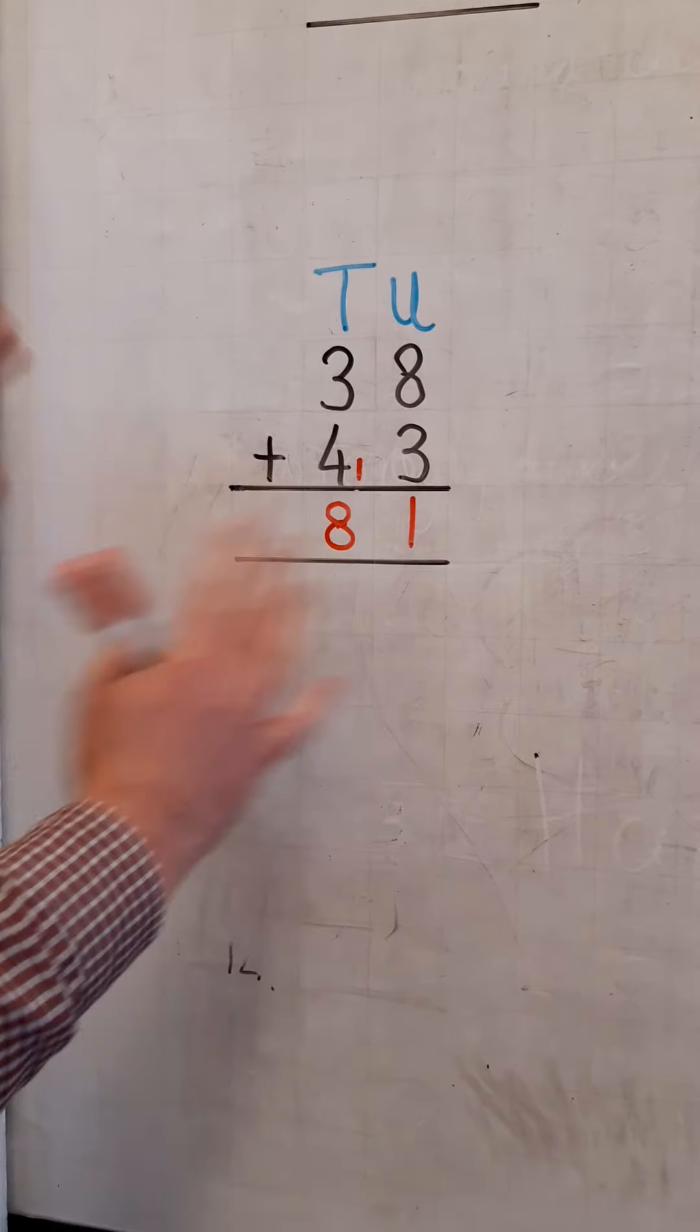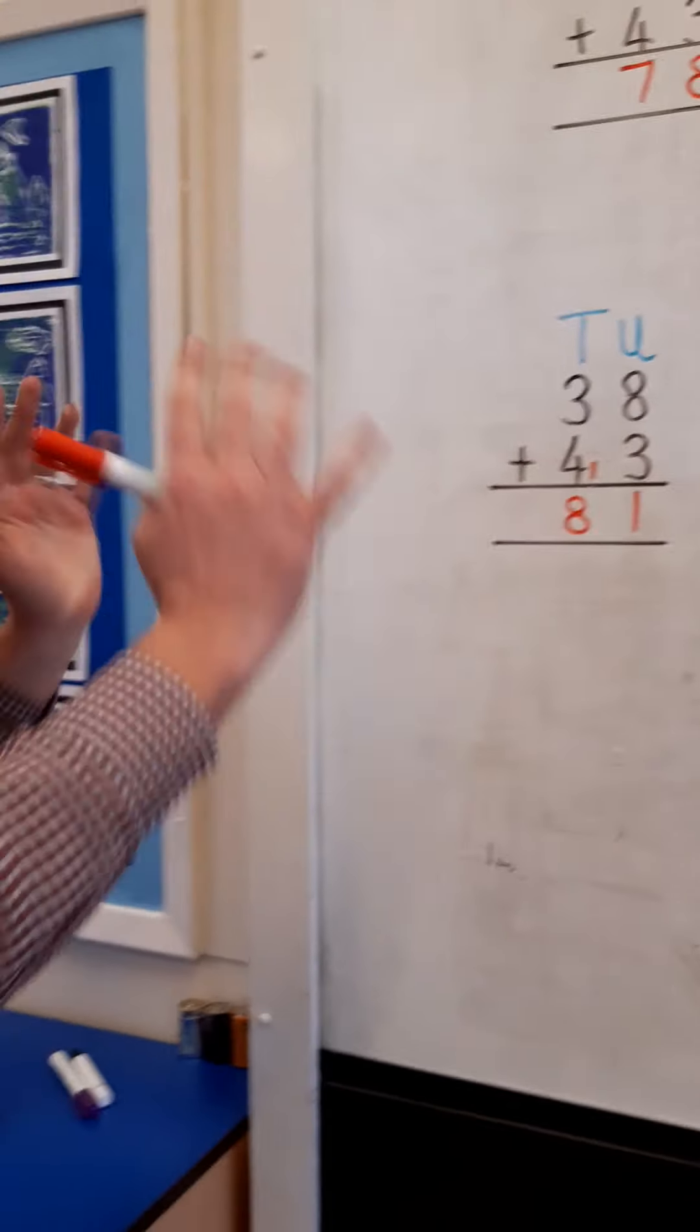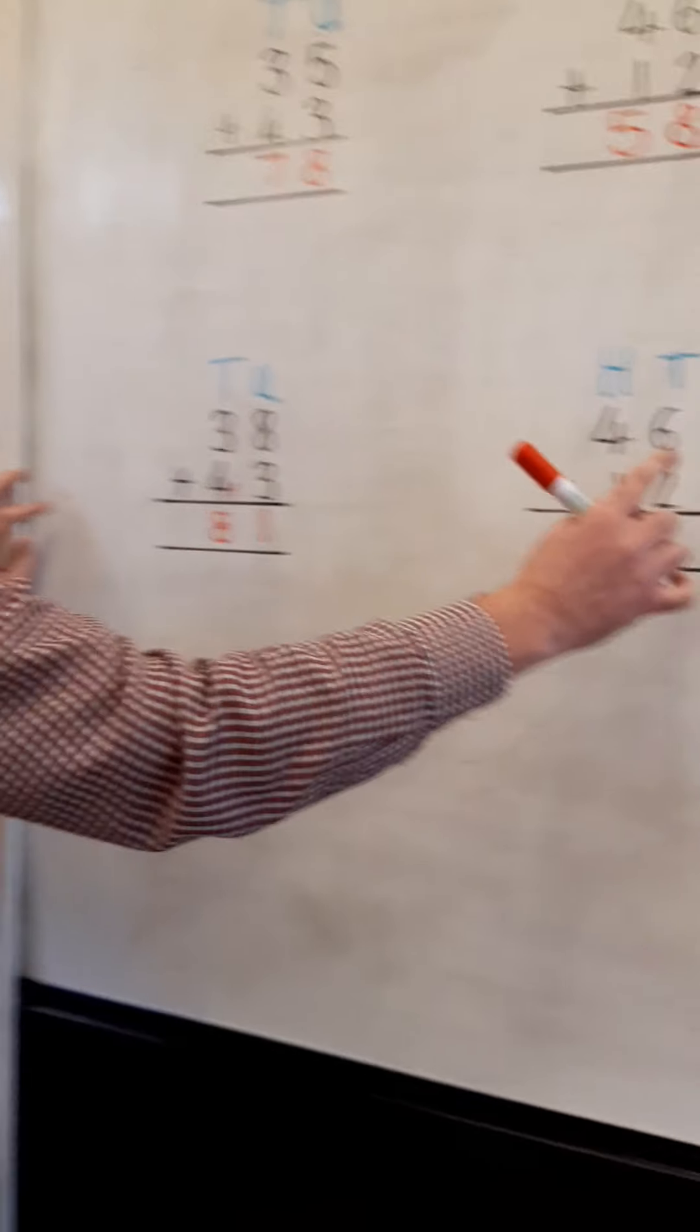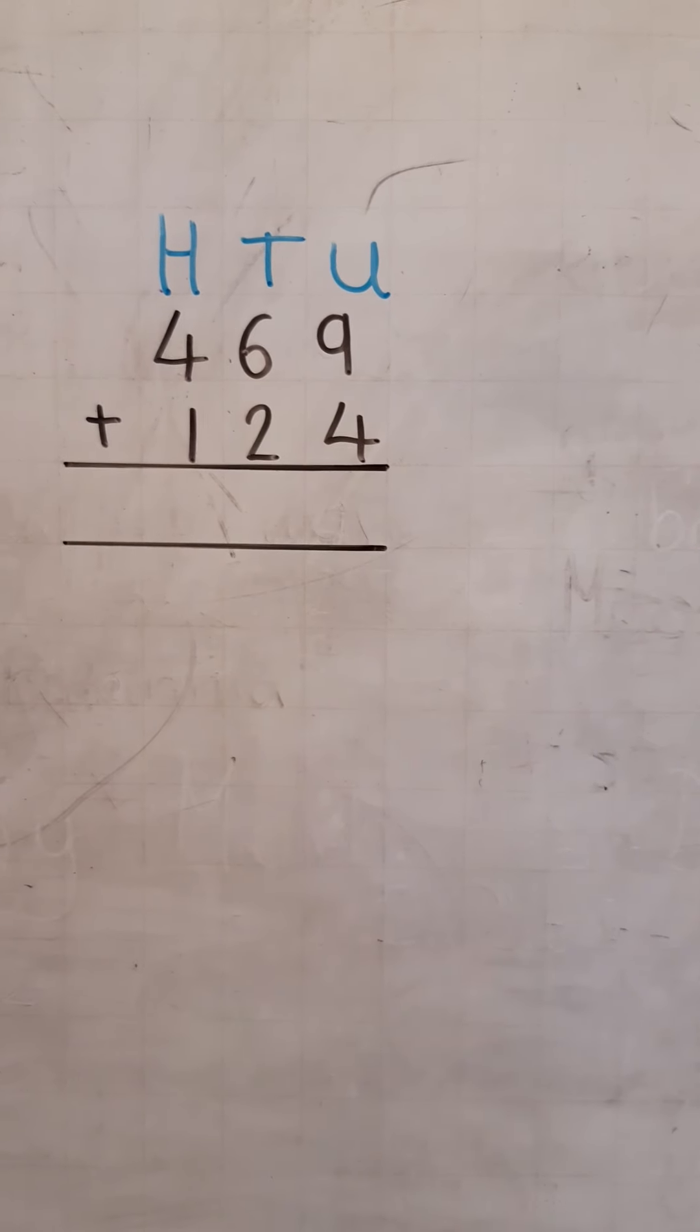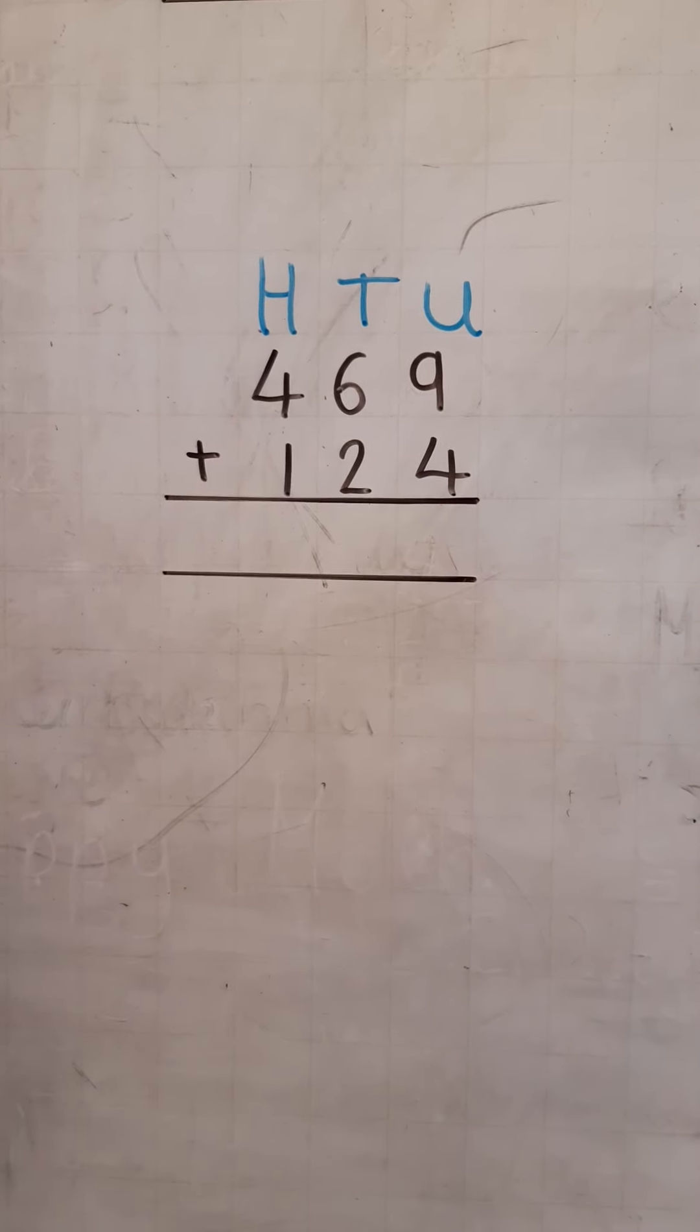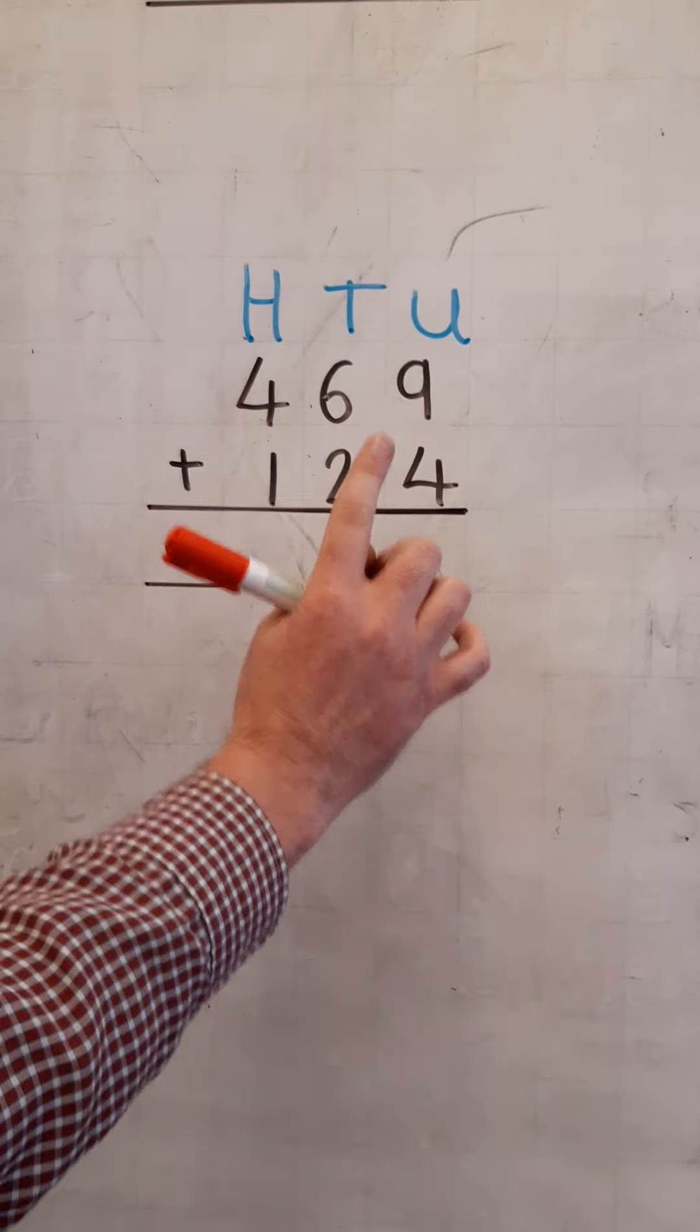And just like before, the number gets bigger, but we still go through the same process. This time, we have nine units, add four units, gives us a total of thirteen units. But thirteen has got two digits. It's got one ten and three units.